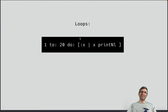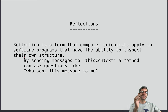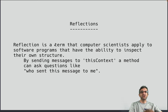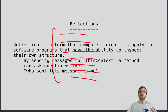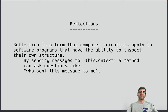Smalltalk also has reflection, which is super cool. Reflection is a term computer scientists apply to programs that have the ability to inspect their own structure. If you have a method and it receives a message, you can use the context to look at which method called you and who sent this message. You have something that refers to practically the tree structure of your program, so you can inspect different parts of it while it's running.